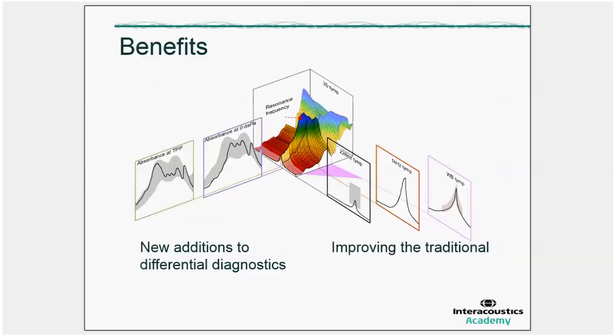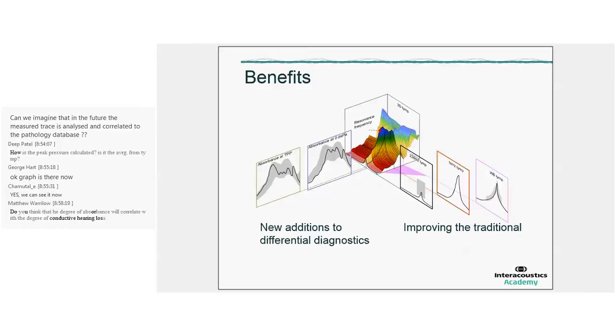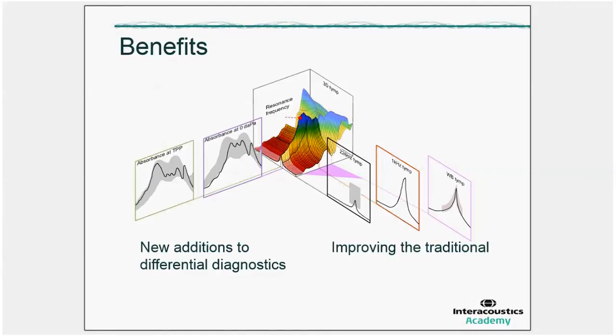Matthew is asking, do you think that the degree of absorbance will correlate with the degree of conductive hearing loss? There is some literature indicating that on a group level, the absorbance graph does indicate the size of the conductive hearing loss. The problem is, however, that based on a single measurement, you cannot predict how big the conductive hearing loss is because the spread amongst different individuals is too big for that. But on a group level, the answer is yes.